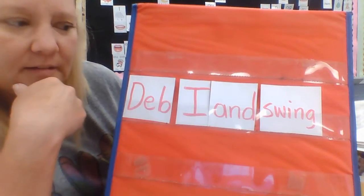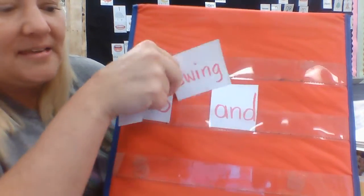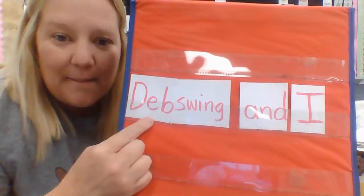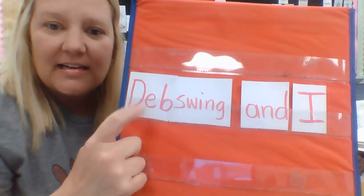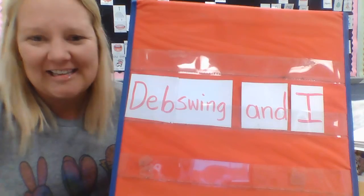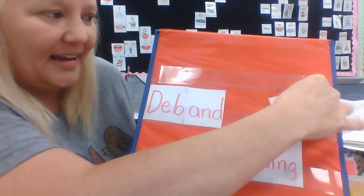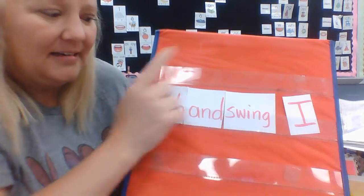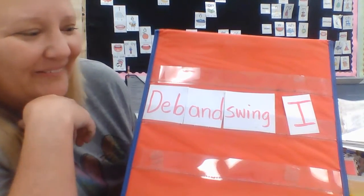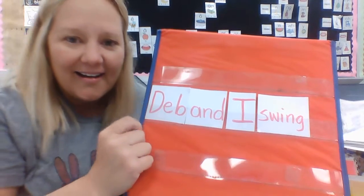Let's keep moving them around and see which one makes sense. How about: Deb, swing, and I? That doesn't sound right, that doesn't make sense. Let me keep looking. Oh, I think I know — I think I figured it out. Deb and swing, I. No. Let me switch these two around — I think I got it now.